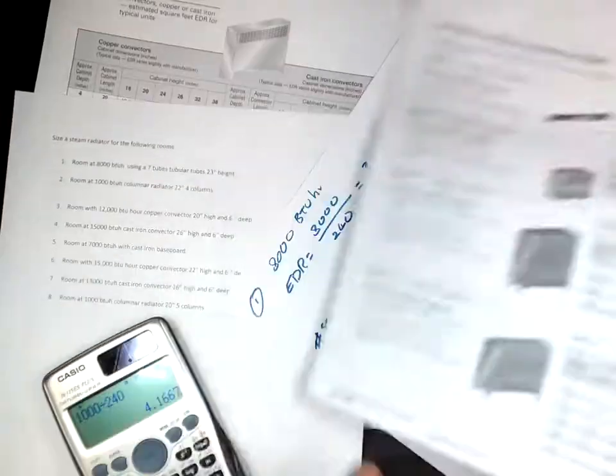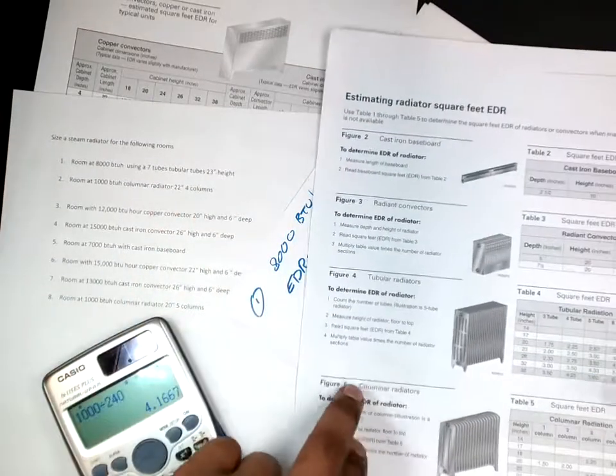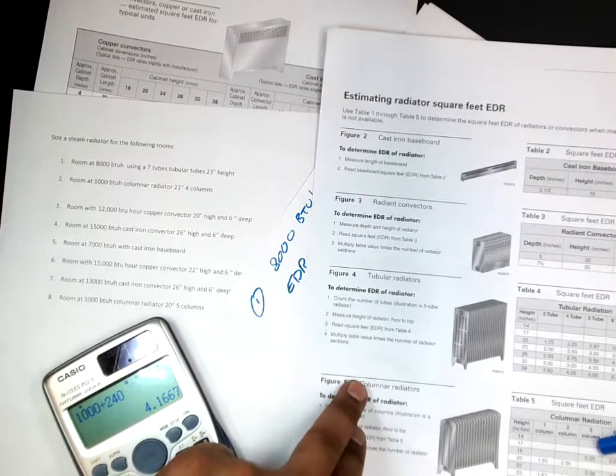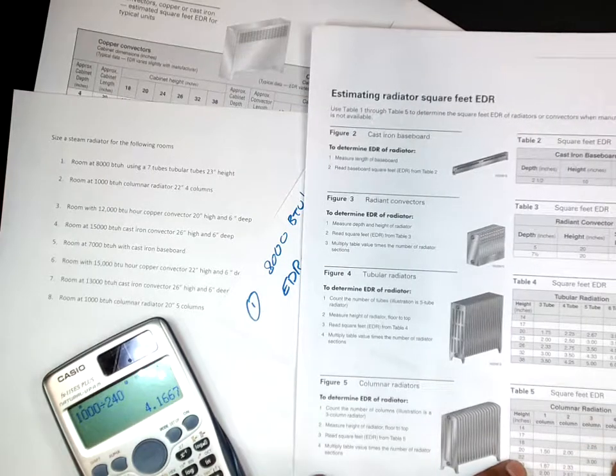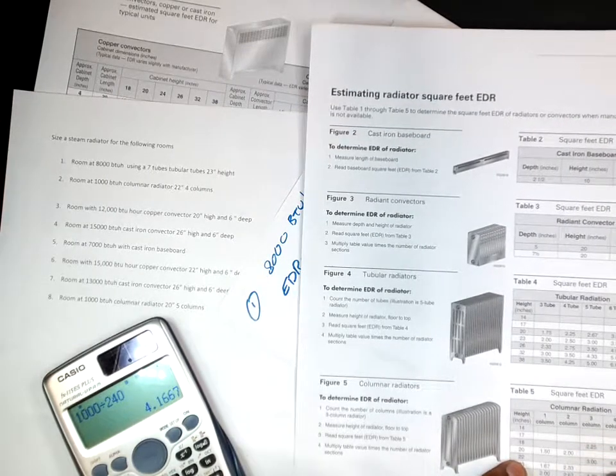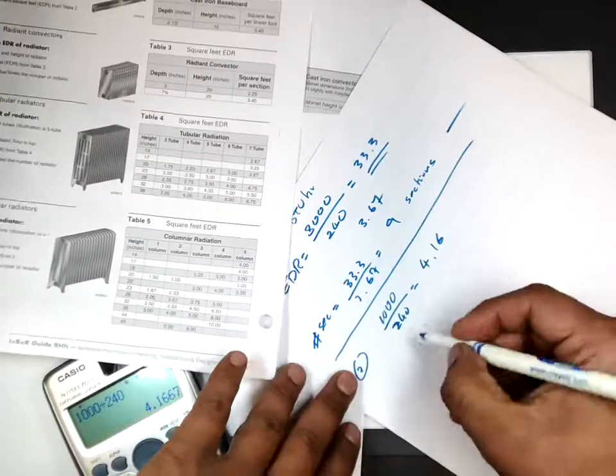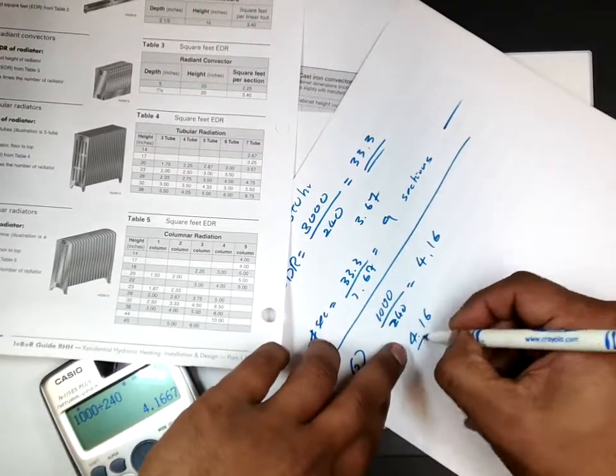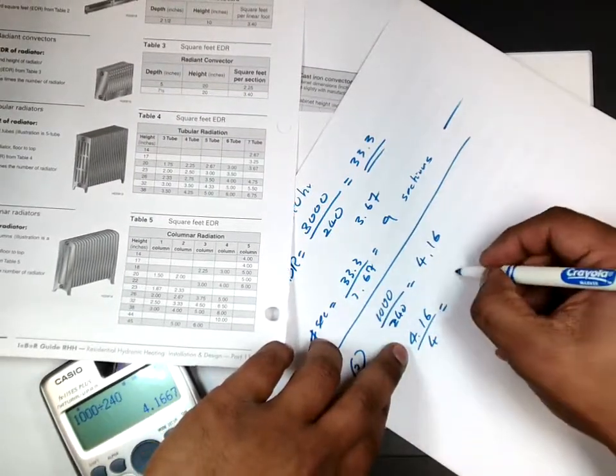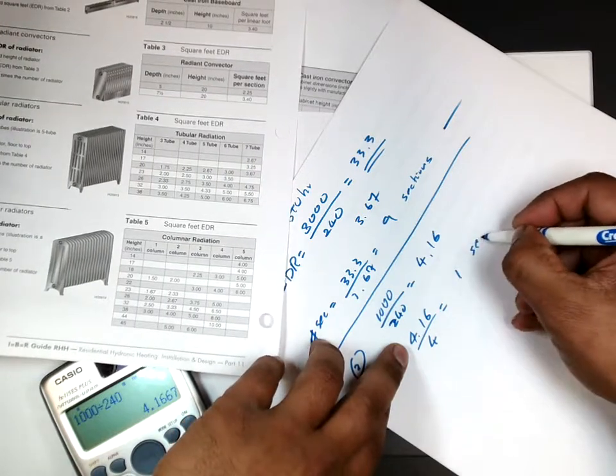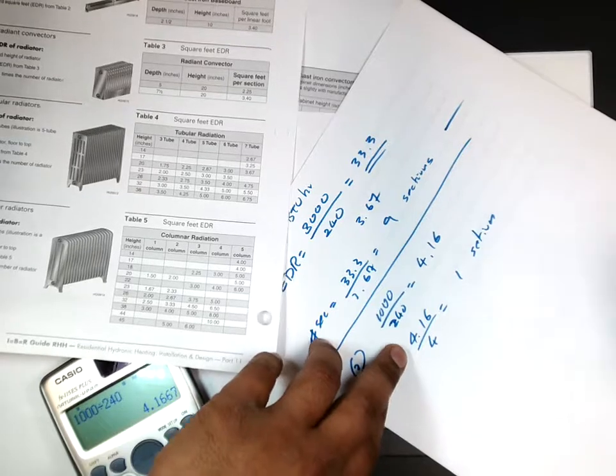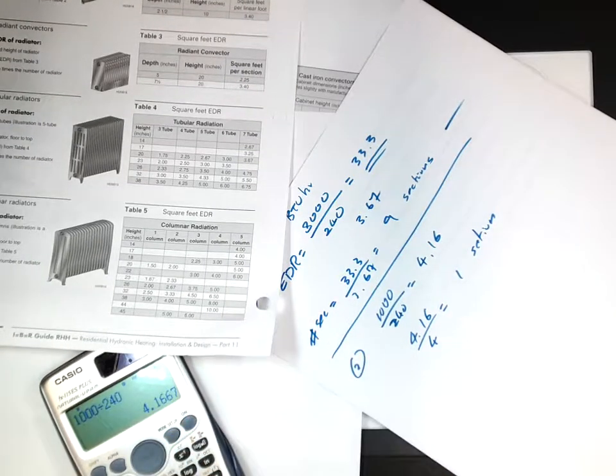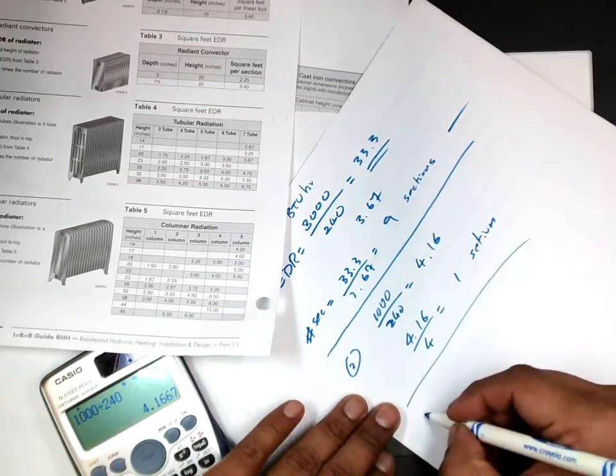Then I'm going to go to columnar radiator, which is this one. And how many? 22 inches. It's here. And how many columns? 4 columns. So it's going to be 4. So 4.16 over 4, and that will be one point something. I'm going to say one section is enough. Let's take a drill and see two sections, but one section you can do. It's a very small area, so it's good to have only one section in there. Number two. Number three.